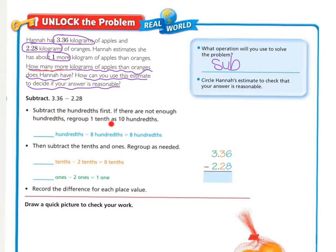If there are not enough hundredths, regroup one-tenth as ten hundredths. But the step even before this is to line up your decimals. Starting on the right and working left, we subtract six hundredths minus eight hundredths. Can I take eight from six? No, so I need to regroup. My three becomes a two, and my six becomes sixteen. Now sixteen minus eight is eight.